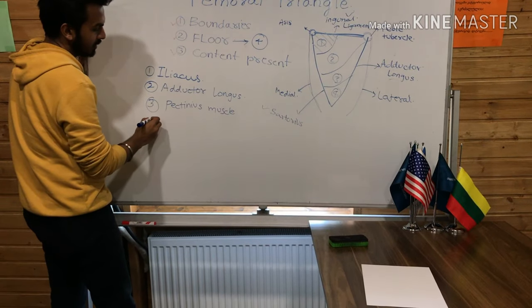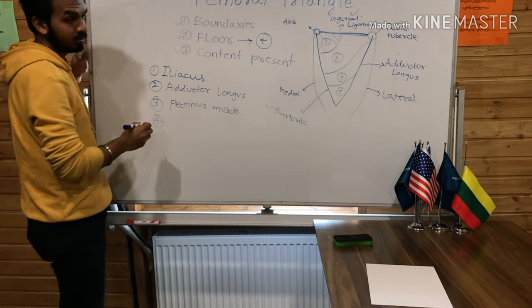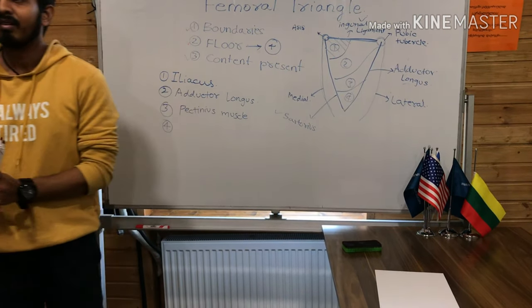The fourth muscle making the floor of the femoral triangle is the iliopsoas muscle. These are the four muscles which form the floor of the femoral triangle.